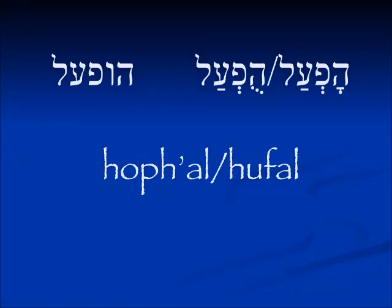Another passive binyan is the ho'fal or hu'fal, variously spelled in all these ways because different vowels do appear in the actual forms. Generally, the ho'fal is the passive form of the hif'il, but not always.